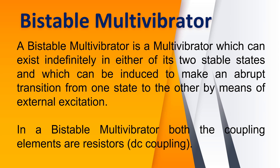A bistable multivibrator is a multivibrator which can exist indefinitely in either of its two stable states. It can be induced to make an abrupt transition from one state to the other by means of external excitation. If you want to induce any change in its state, it requires external triggering. Upon the application of external triggering, it makes an abrupt transition from one state to the other.